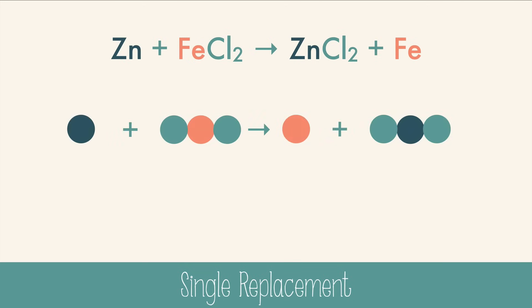So here we have an equation, a drawing, and now a simple formula for single replacement reactions. A plus BC yields AC plus B.